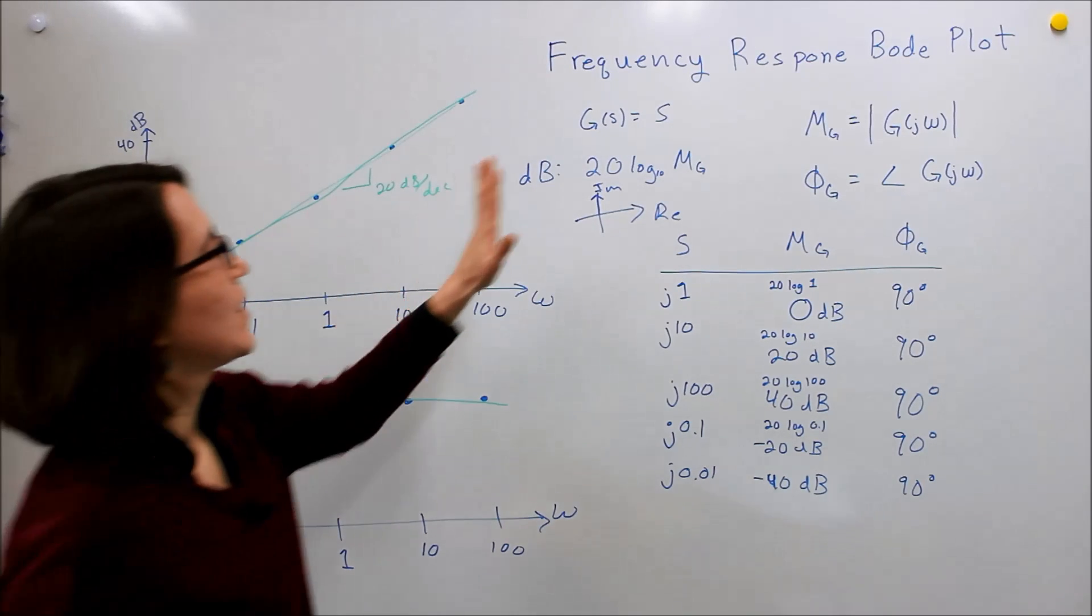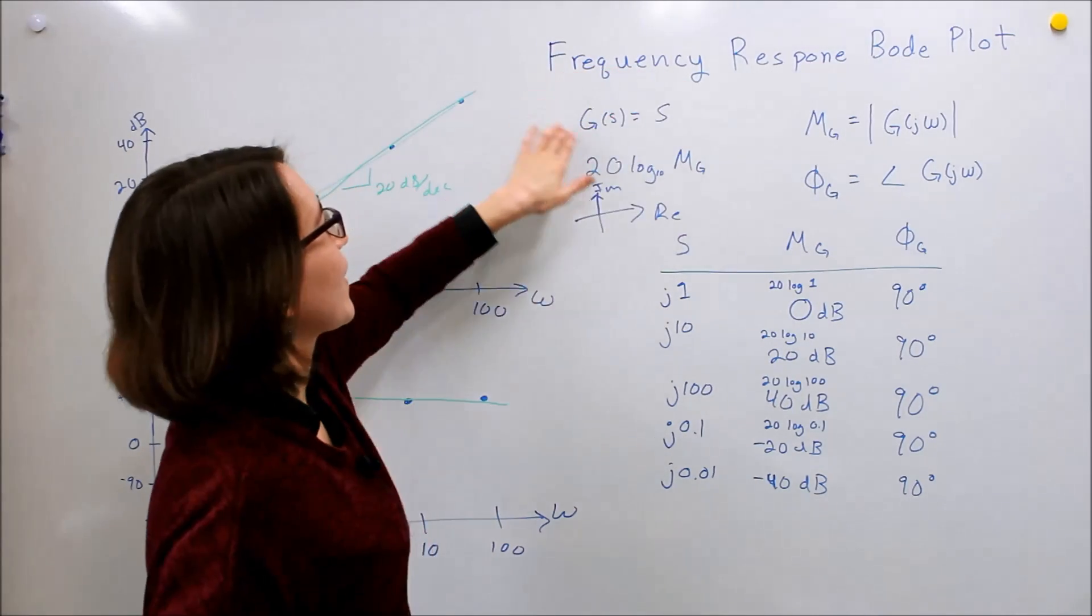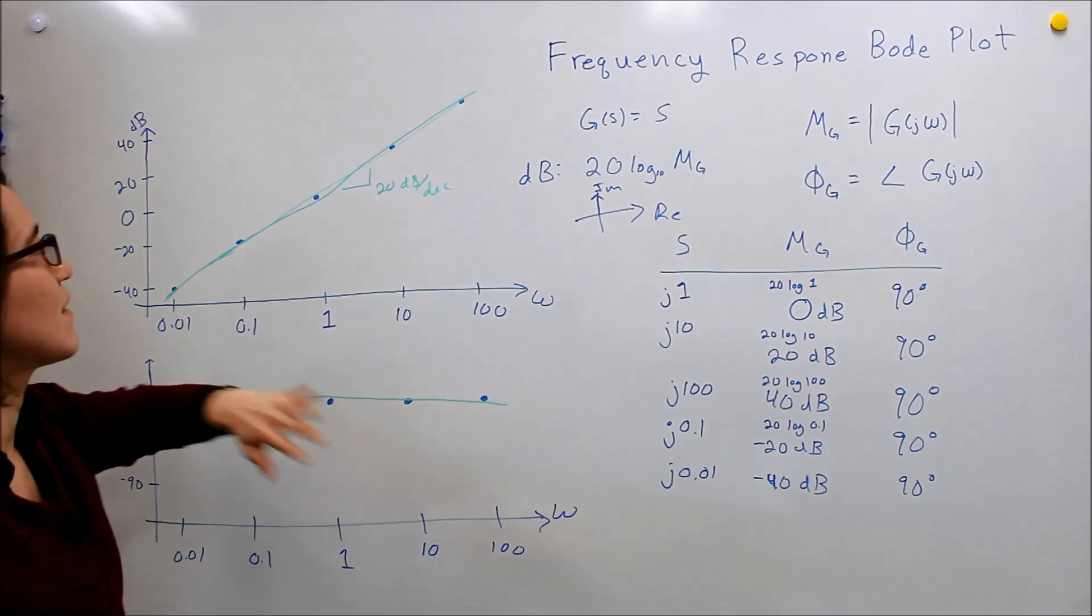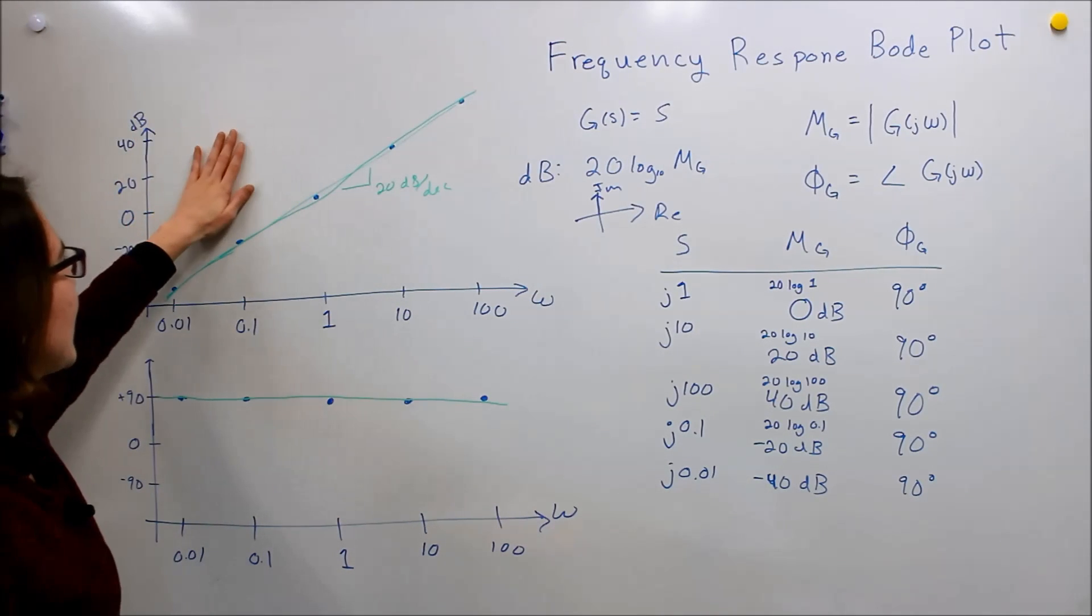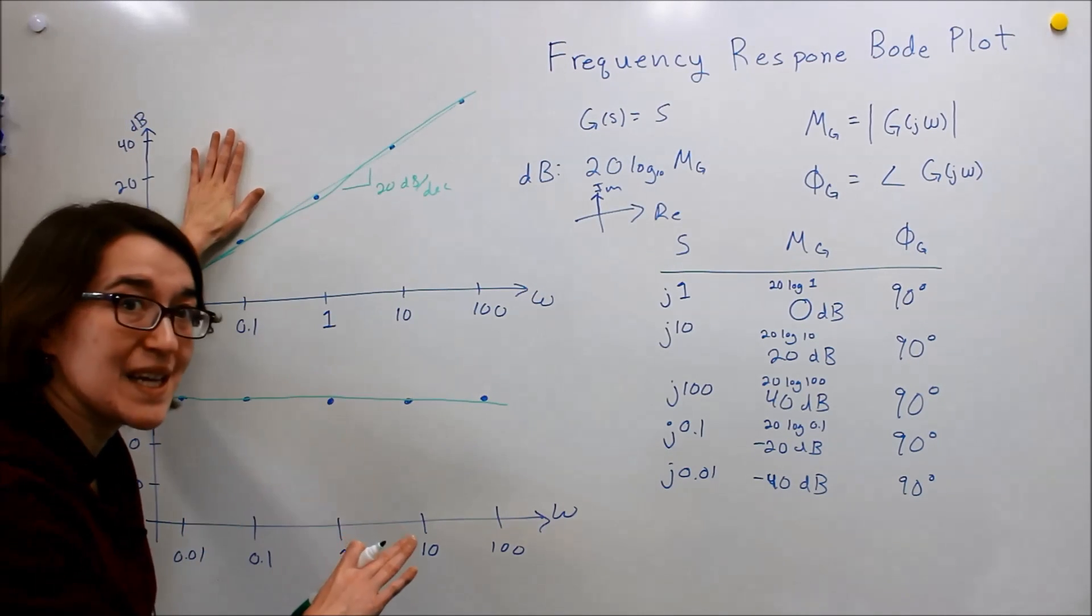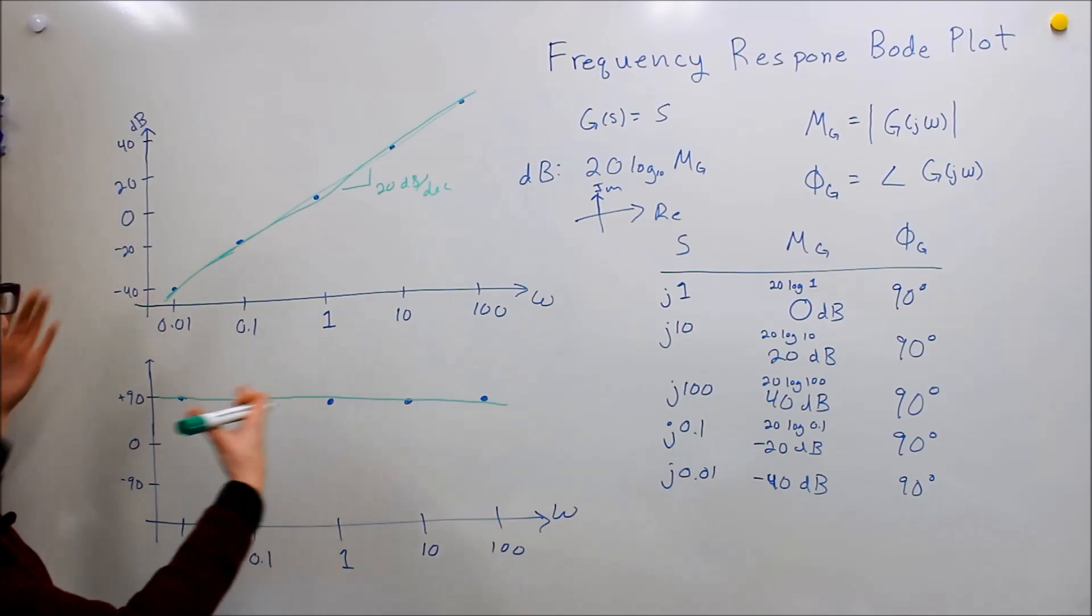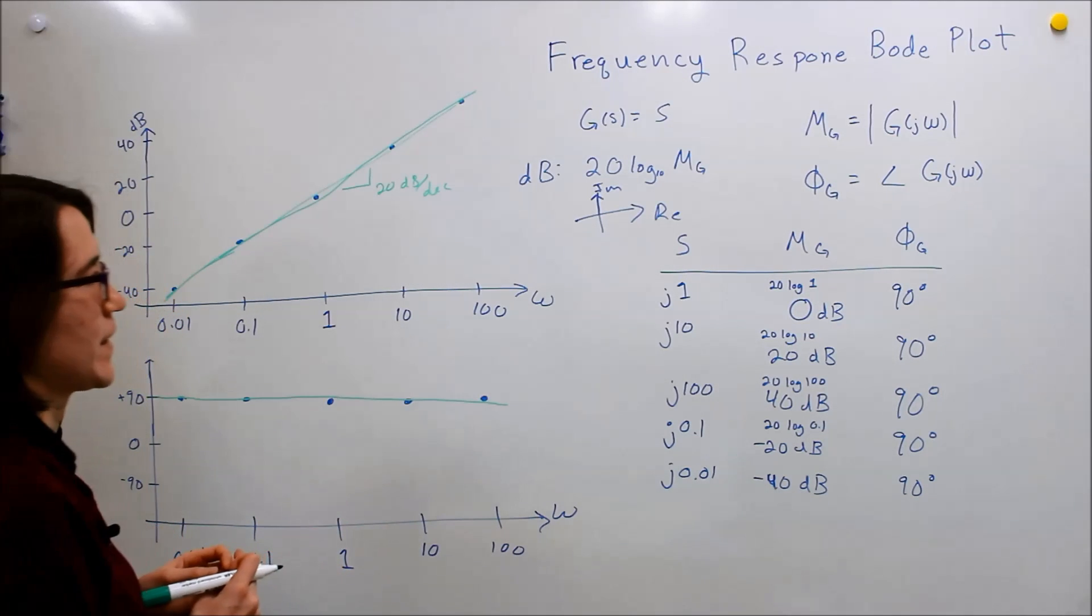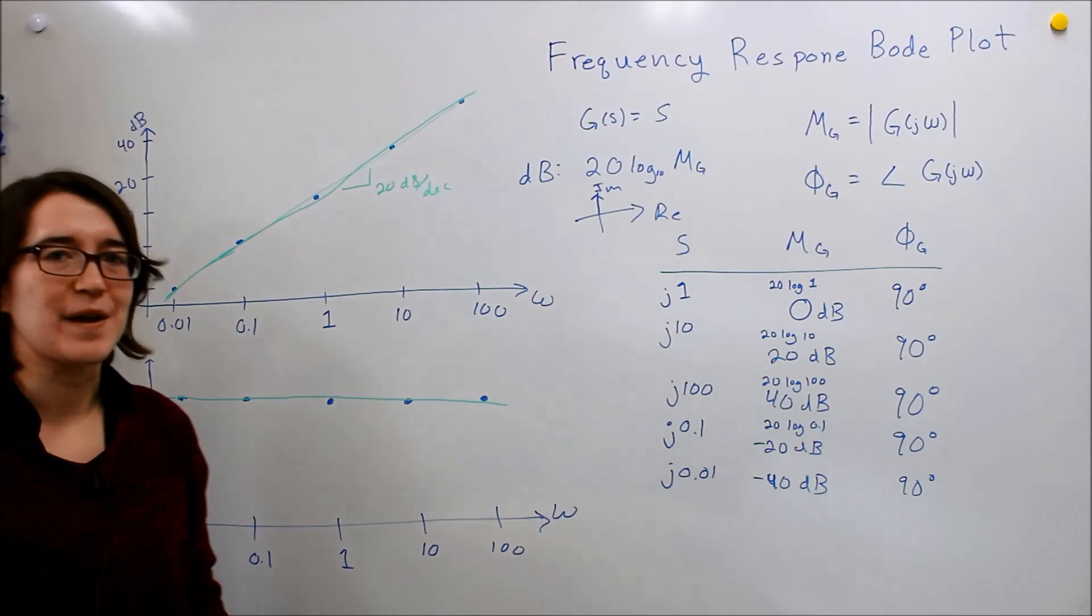So we've used these basic equations on our transfer function to figure out the frequency response for the Bode plot. We looked at it in terms of magnitude in dB and then the phase. Most of the time we use degrees for the angle, but you can also use radians. That's the Bode plot.